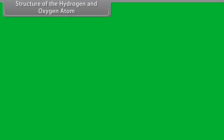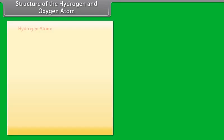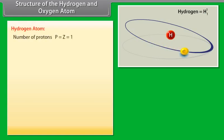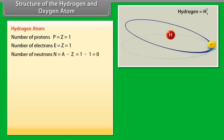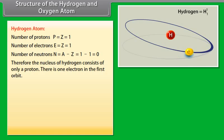Structure of the hydrogen and oxygen atom. Hydrogen atom. Number of protons, P is equal to Z is equal to 1. Number of electrons, E is equal to Z is equal to 1. Number of neutrons, N is equal to A minus Z which is equal to 1 minus 1 which equals 0. Therefore, the nucleus of hydrogen consists of only a proton. There is one electron in the first orbit.